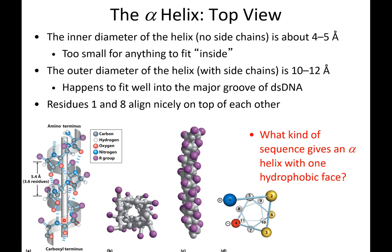Looking at this right-handed alpha helix, if we follow the backbone, the big purple balls represent the R groups sticking out to the side. Notice how we have a nitrogen hydrogen bonding with a carboxylic acid. The hydrogen bonds run parallel with the long axis of the helix, while the R groups stick out perpendicular to the long axis.